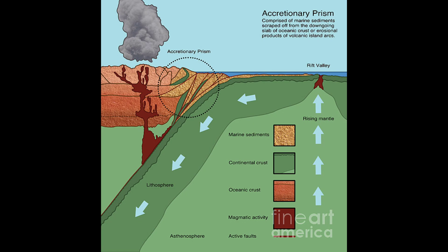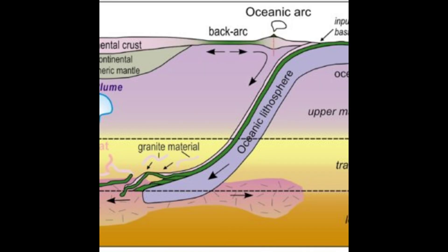Accretionary wedges are structurally complex parts of these subduction zone systems that form on the landward side of the trench from material scraped off from the subducting plate, as well as trench fill sediments. They typically have wedge-shaped cross sections and one of the most complex internal structures of any tectonic element known on Earth.